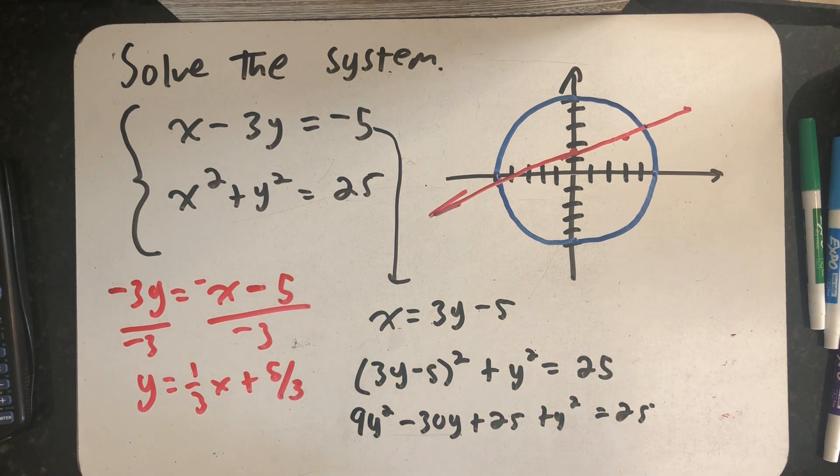If we subtract 25 from both sides, the 25s will cancel. 9y² plus 1y² gives me 10y² minus 30y on this side.